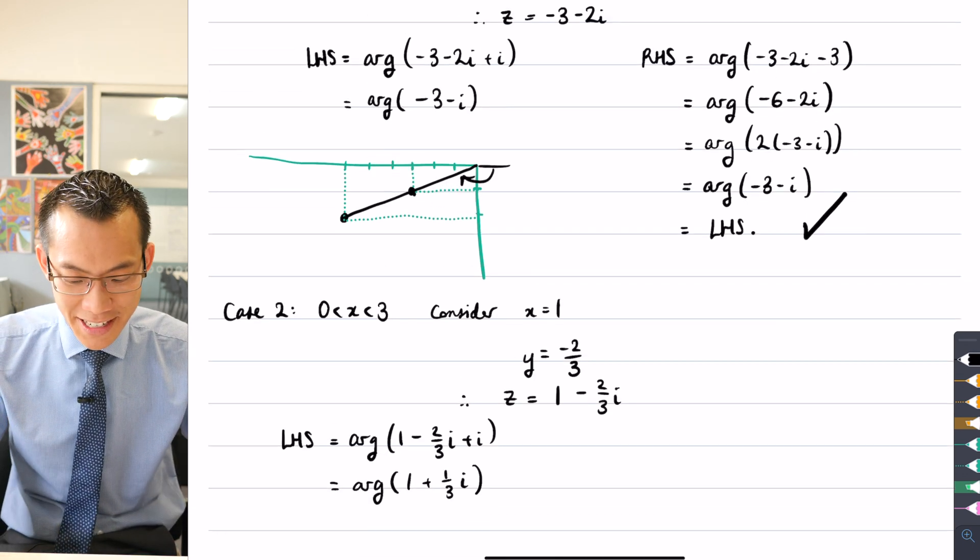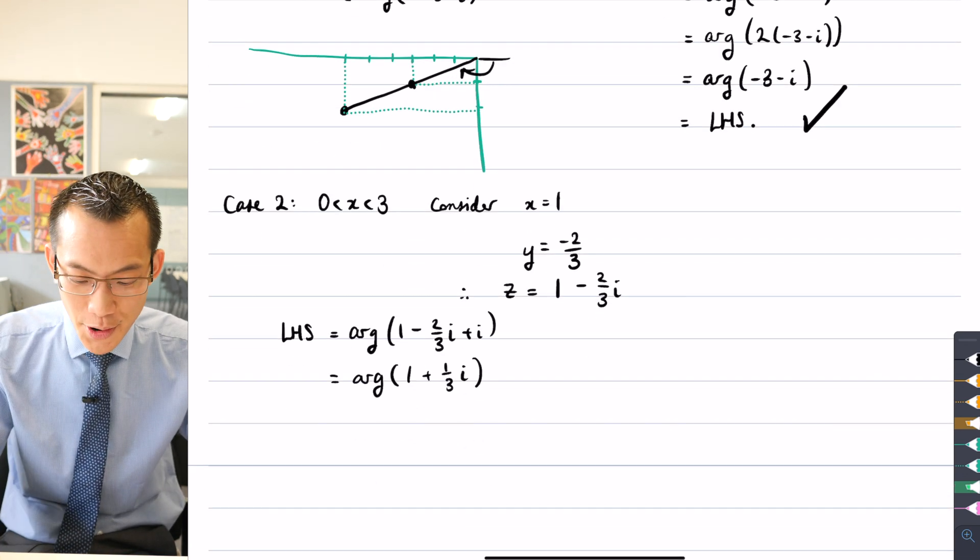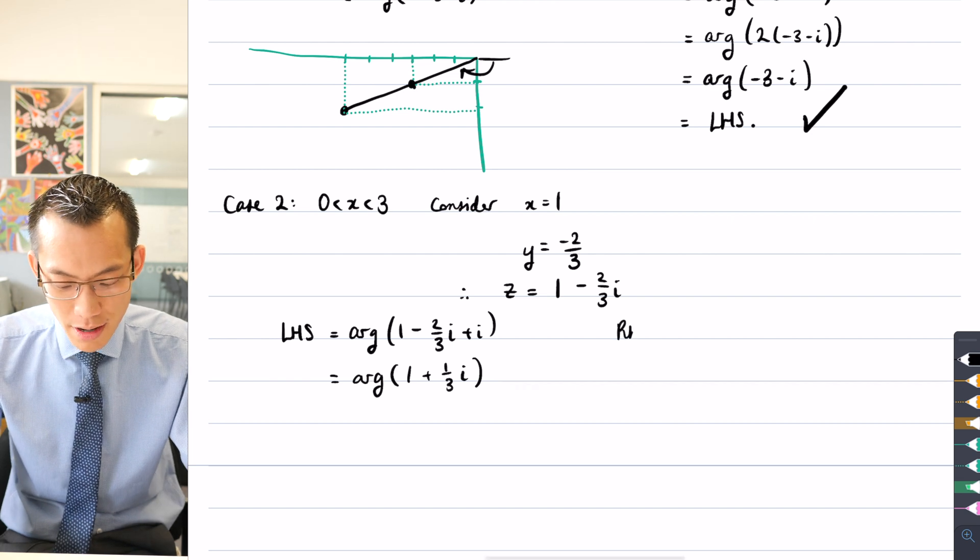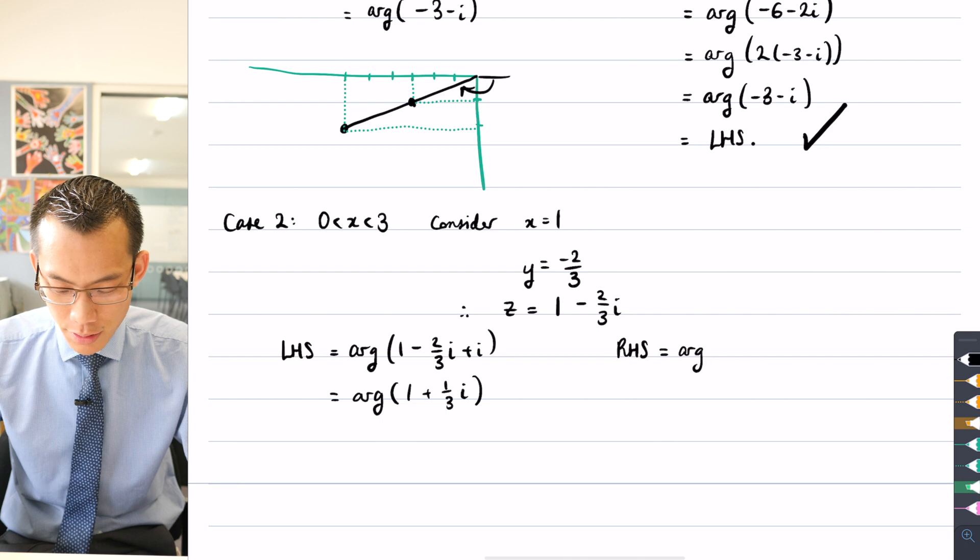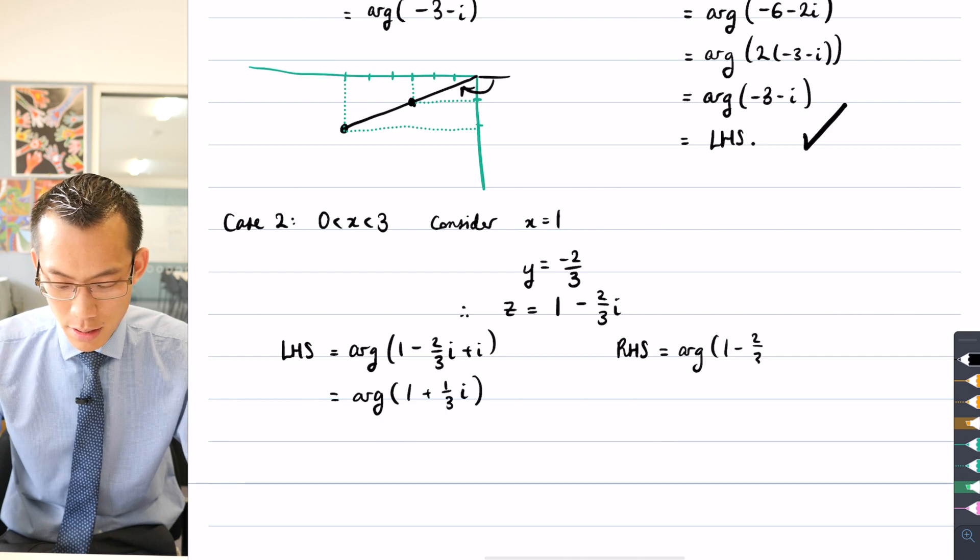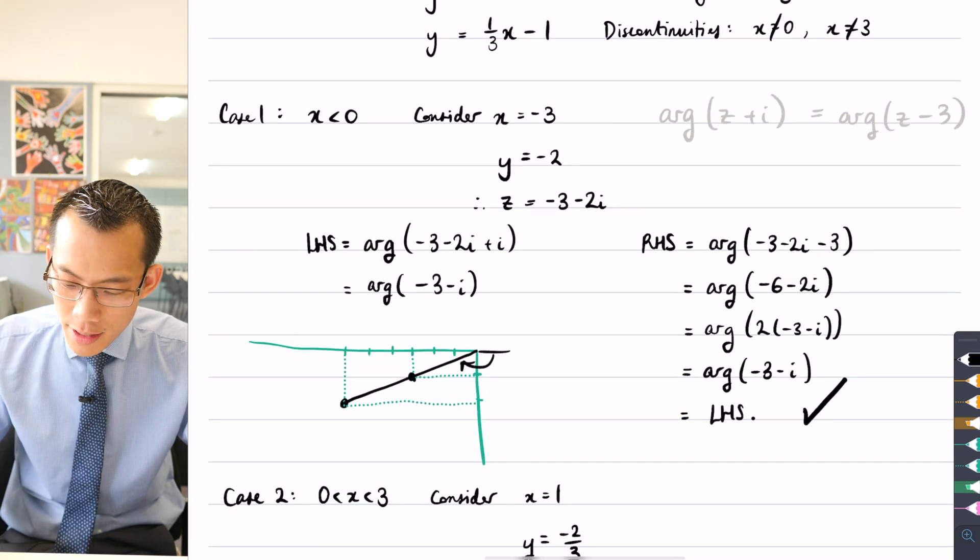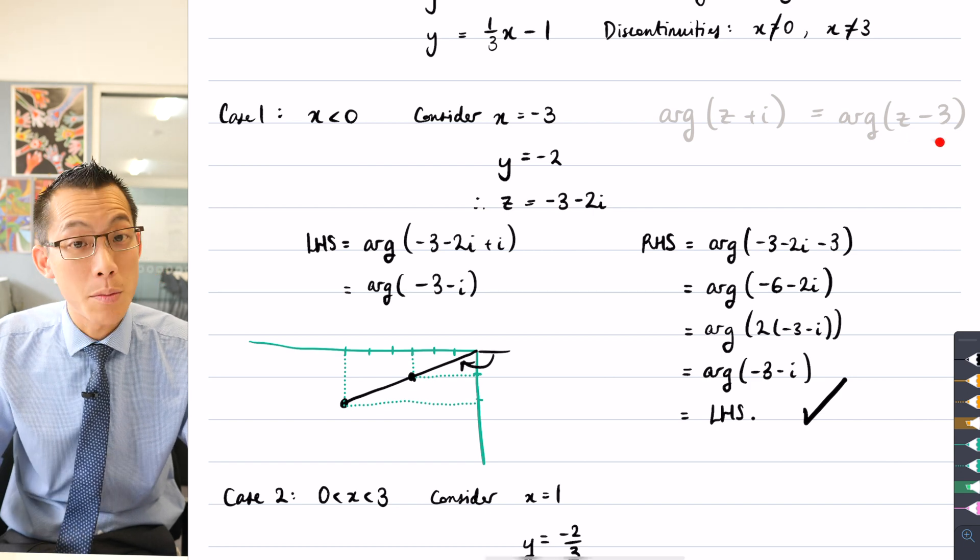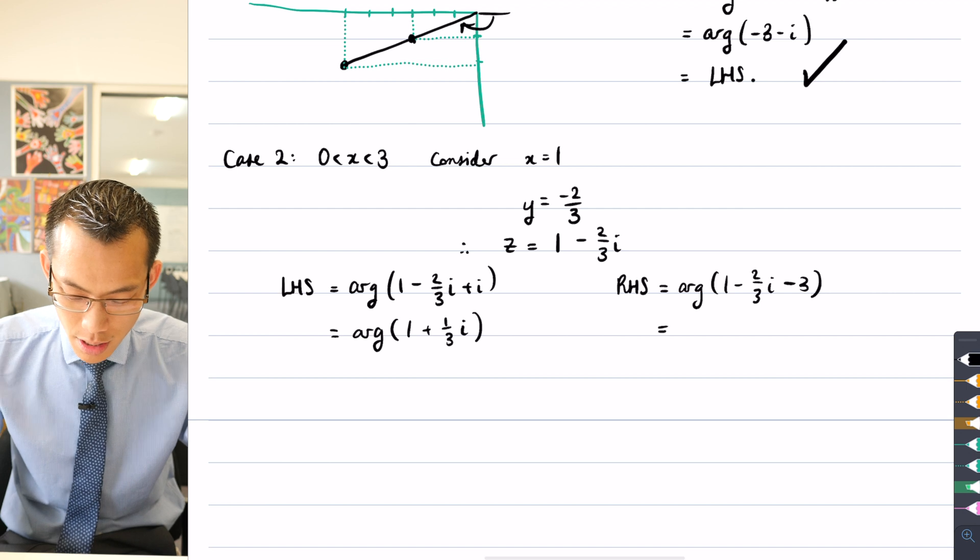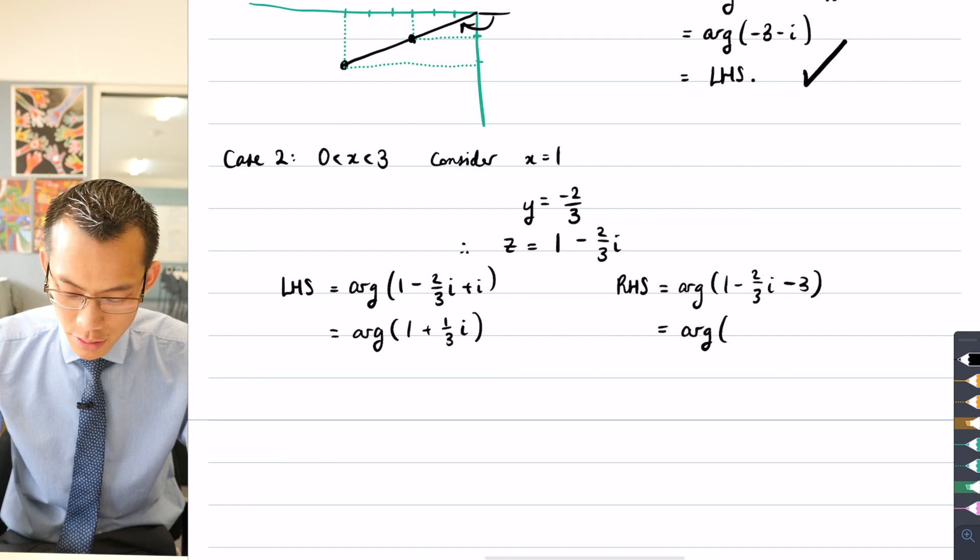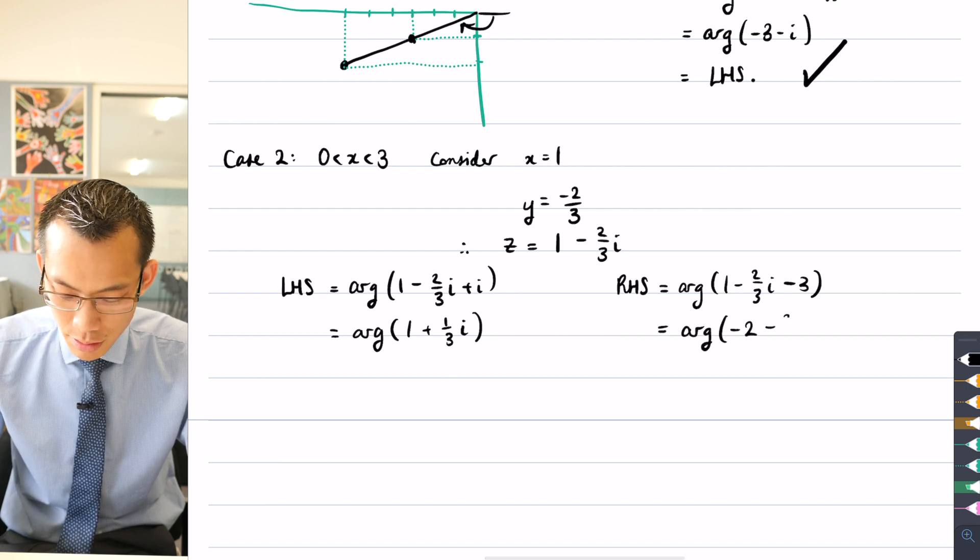Again, just like I did before, I don't know what that angle is, but I don't need to know exactly what its value is. I just need to compare it with the right-hand side. So here I've got arg of same complex number one minus two thirds i. And then I need to, just reviewing, I need to subtract three. So let's do that. Minus three. So my real components are going to cancel a little bit. I get negative two minus two thirds i.